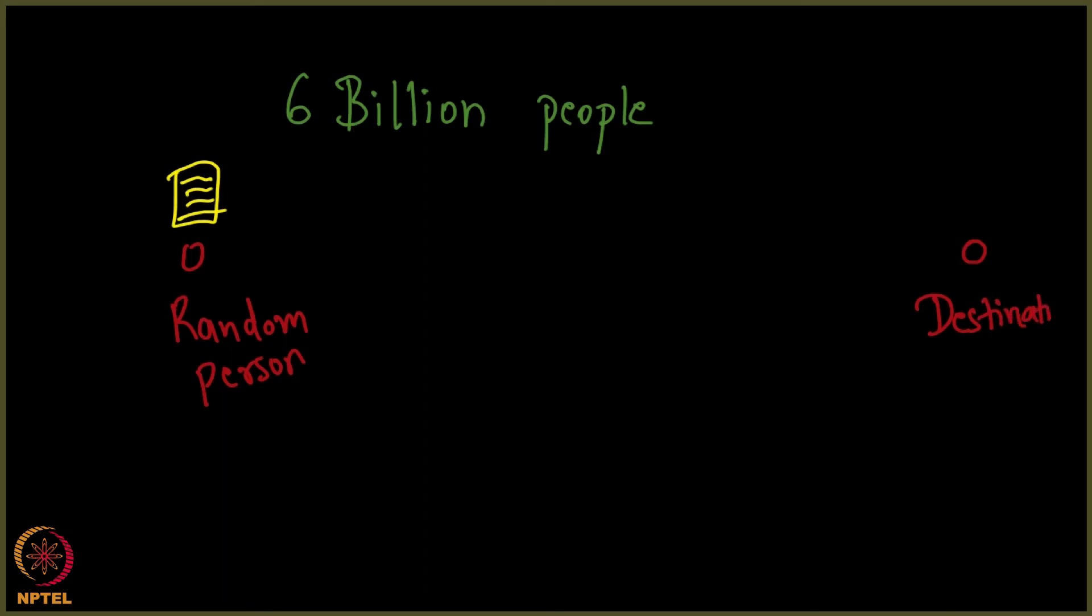Imagine there are 6 billion people in this world, and some random person when you take and give a letter to him and ask him to make this letter reach the destination. Although he has no clue how to do this, he somehow manages to give it the impetus, he gives a push to it, and every single person does the same thing. Finally, it was observed that in roughly 6 hops, you reach the destination.